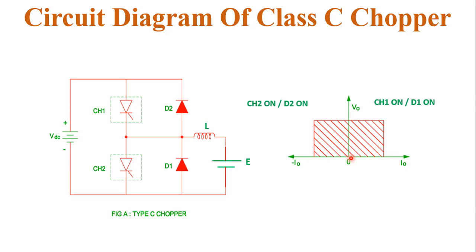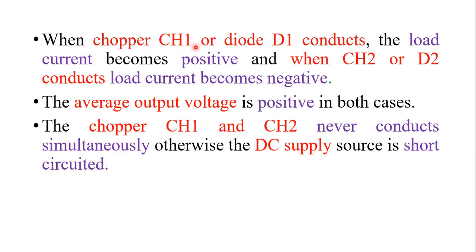Class C chopper has two quadrant operation, working in first and second quadrant. When it works in the first quadrant, output voltage and output current are both positive. When it works in the second quadrant, output voltage is positive but output current is negative. When CH1 or diode D1 conducts, load current becomes positive. When CH2 or diode D2 conducts, load current becomes negative. The average output voltage is positive in both cases. CH1 and CH2 never conduct simultaneously, otherwise the DC supply source is short circuited.